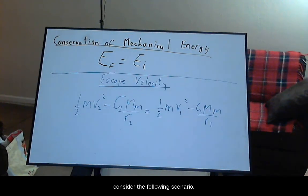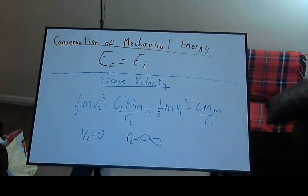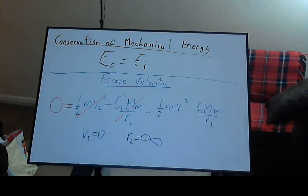Now consider the following scenario. We throw a projectile with speed v1 from a surface at radius r1 from our central mass. At what speed do we need to throw it so that it will never return? This happens when the total mechanical energy of the object is zero.